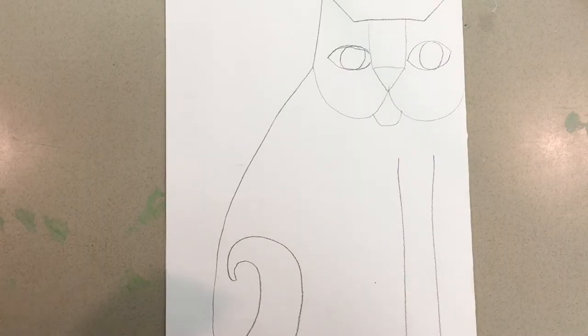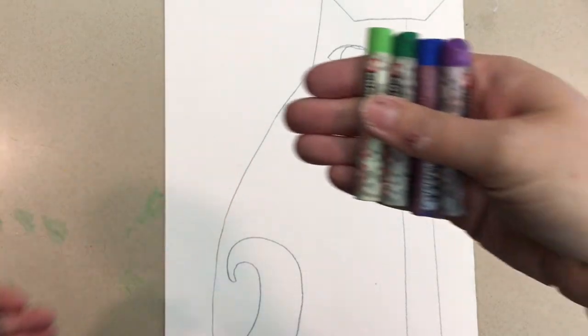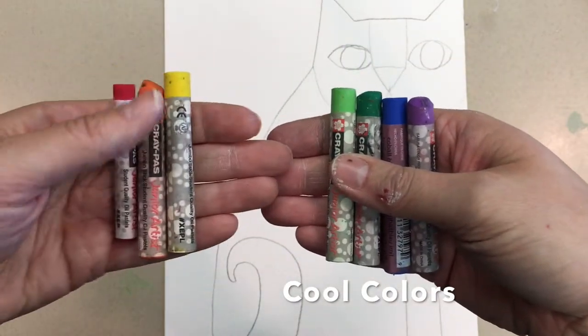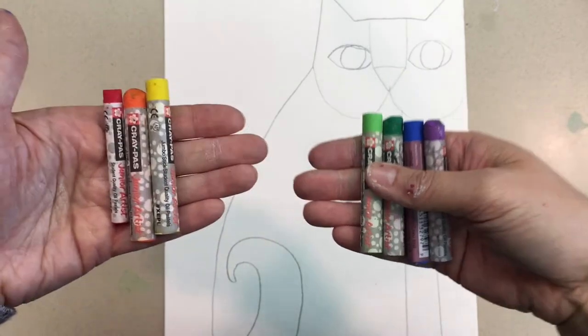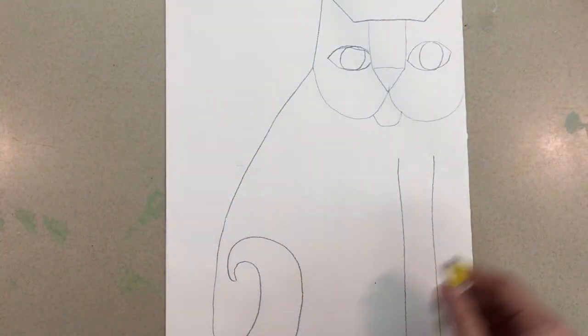Now when using oil pastels you have to choose whether you're going to use warm colors or cool colors. Whichever one you choose to draw with, you'll use the other one to paint with. I'm going to use red, orange, and yellow, the warm colors.